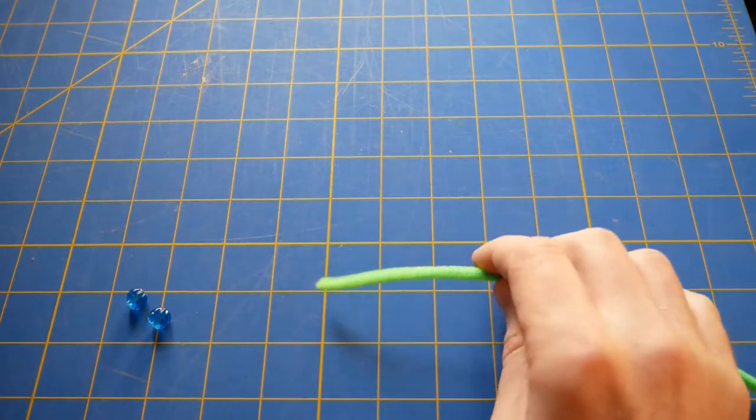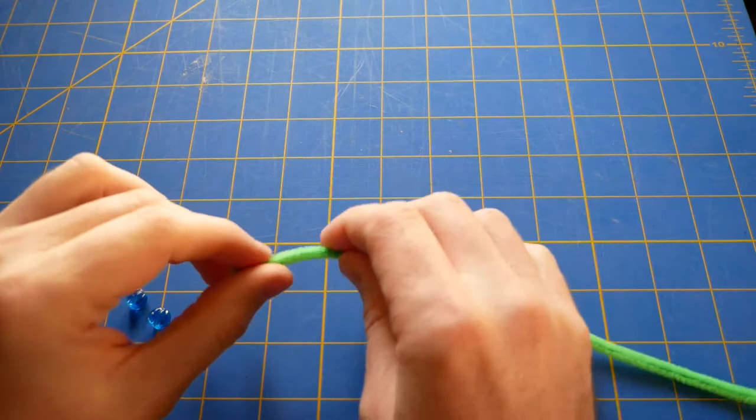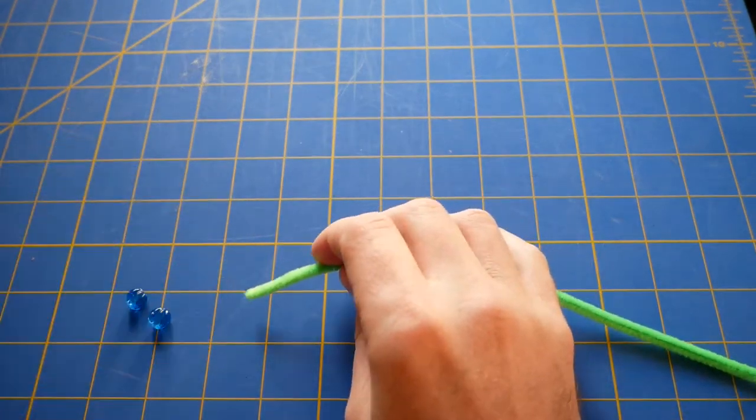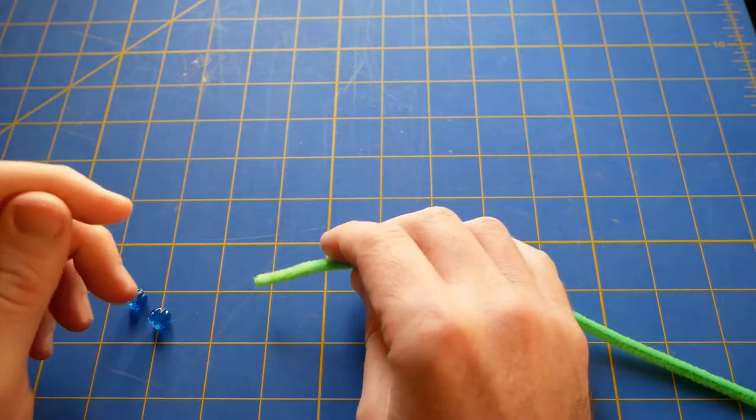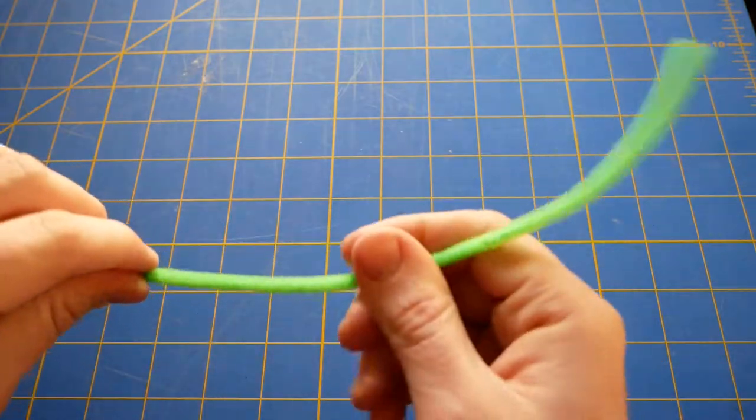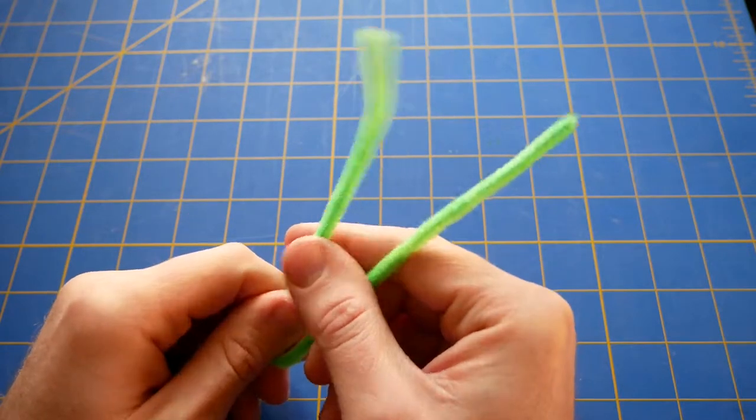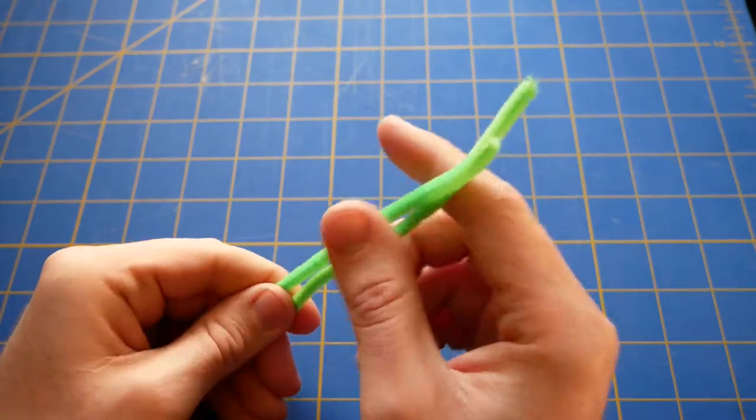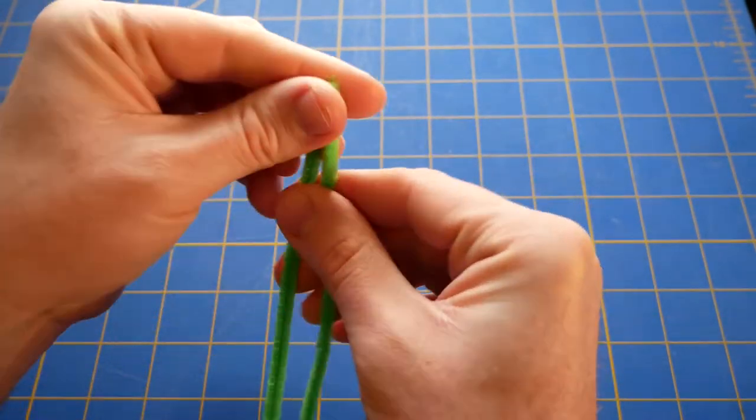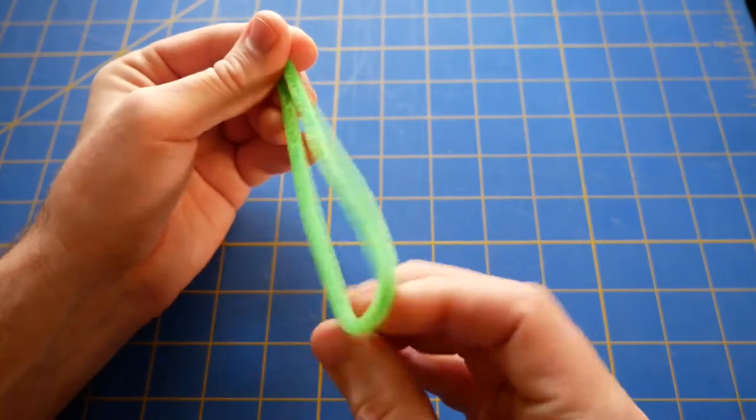Okay, so today I'm going to show you how to make the praying mantis. To make the head of the praying mantis, you have to fold the pipe cleaner in half like this.